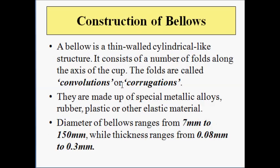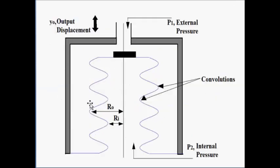Now the construction of the bellow. A bellow is generally a thin-walled cylindrical cup-shaped structure which has a number of folds or convolutions or corrugations along the axis. This cylindrical structure can be made of metallic alloy, rubber, plastic or any other elastic material which can be stretched or compressed without breaking. Generally the bellows is in this form.